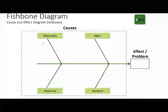As you can see, it's the standard format — it looks like a fishbone. At the head of the fish you have the effect, or the problem, or the thing that you're trying to tackle. And then there are four streams: materials, mean, machine, and method. These are the four most common causes or groups of causes.